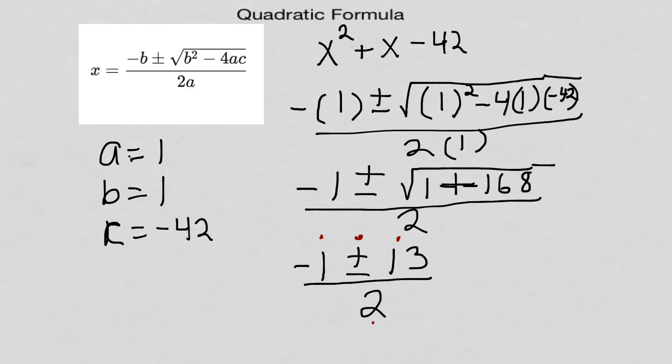Negative 1 plus 13 gives me 12 divided by 2, which gives me 6. So there's my first answer, one of my roots, one of my zeros is 6.